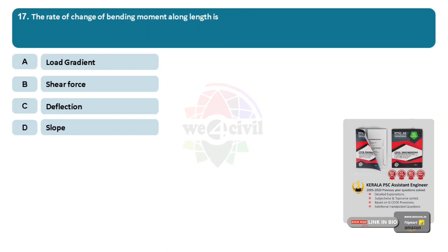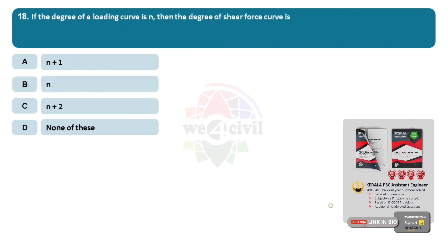Question 17: The rate of change of bending moment along length is? Options: A, load gradient. B, shear force. C, deflection. D, slope. Answer is Option B, shear force. Question 18: If the degree of a loading curve is n, then the degree of shear force curve is? Options: A, n plus 1. B, n. C, n plus 2. D, none of these. Answer is Option A, n plus 1.